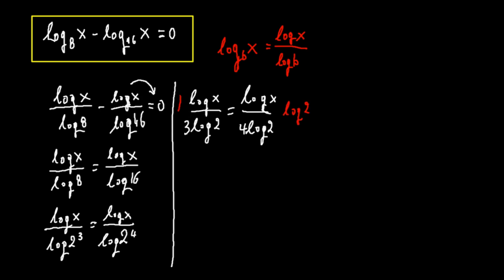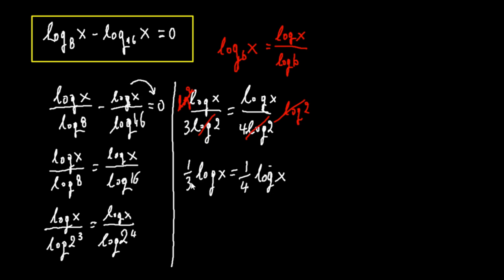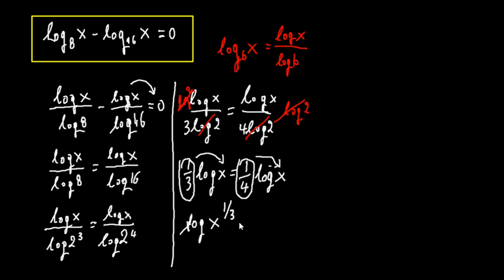We multiply both sides by log 2, so the log 2 terms cancel, giving us one-third times log x equals one-fourth times log x. We can rewrite this as log x to the one-third equals log x to the one-fourth.